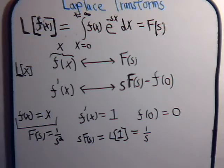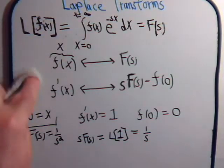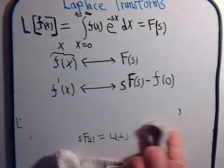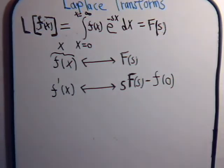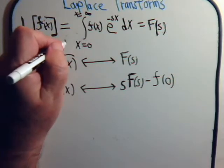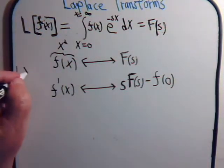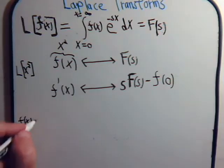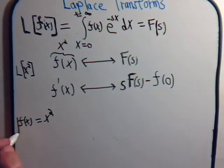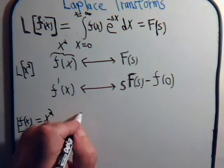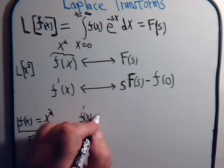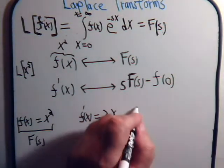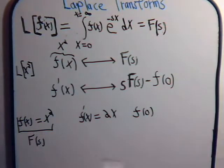Now let's say that we wanted to find the Laplace transform not just of x, but let's try x squared and see what that gives us. Again, we're not going to use our definition at all — we're trying to avoid taking integrals. So now f(x) is x squared, and we want the Laplace transform of x squared. So f'(x) equals 2x, and f(0) — when x is 0 — is just 0.